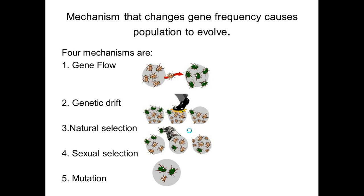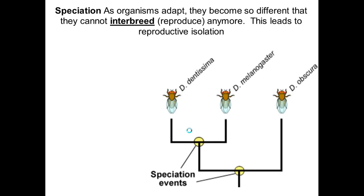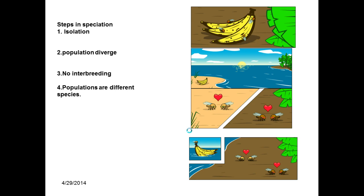These small changes can lead to big changes, and that's what we call speciation. Speciation involves a common ancestor with branches diverging because of these changes — they no longer interbreed with one another, leading to reproductive isolation. Here's a scenario for how speciation can occur: first there is isolation, then populations diverge because they're separated with no interbreeding, and eventually they become so different that when they do come together, they don't interbreed.